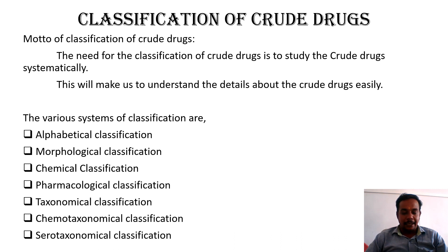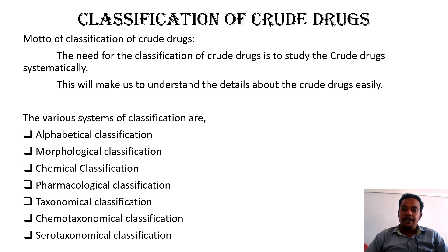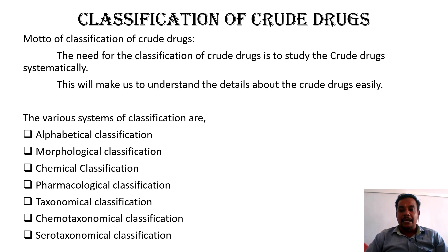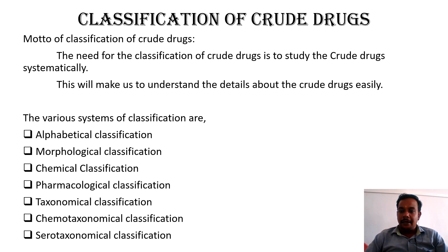First, let's look at the objective. Why do we have to classify crude drugs? The main objective is to study them in a systematic way. When we study anything in a properly systemized, defined, standard procedure, it will be very easy for us to understand and to explain it to others. The main motto of classifying crude drugs in a particular order is to study them in a systematic manner so that we can understand them very easily.